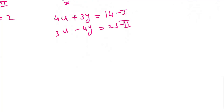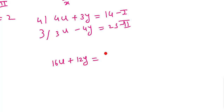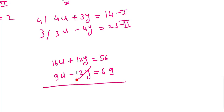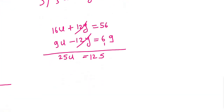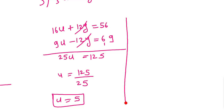To eliminate y, multiply the first equation by 4 and the second by 3: 16u + 12y = 56 and 9u - 12y = 69. Adding: 25u = 125, so u = 5.